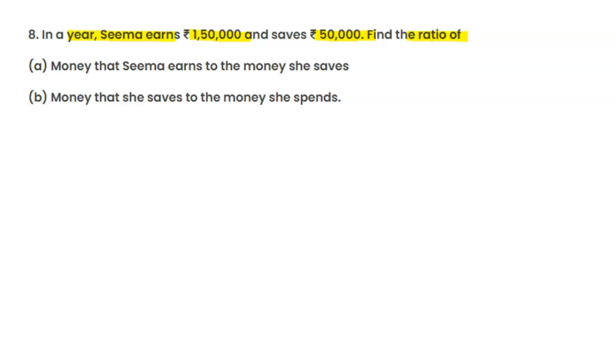Part (a): Money that Seema earns to the money she saves. Part (b): Money that she saves to the money she spends. We need to find these ratios.